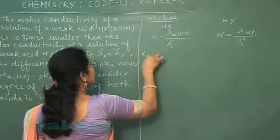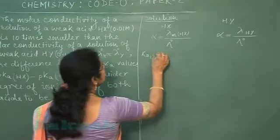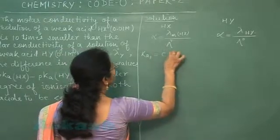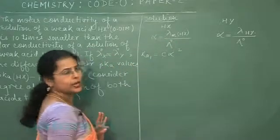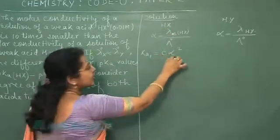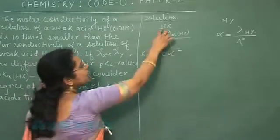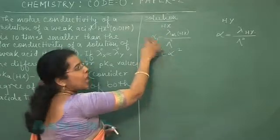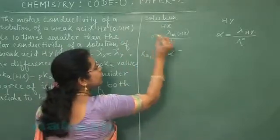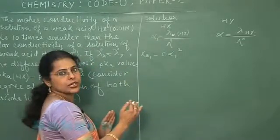This acid के ionization constant को Ka1 से represent कर रहे है. This Ka1 is C alpha square. Now this C is the concentration of HX and this alpha is the degree of ionization of HX. तो यहाँ पर हम इसके degree of ionization को alpha से represent कर रहे है, alpha 1 से. इसलिए आप यहाँ फॉर्मला में से alpha 1 कंसिदर के जिए.